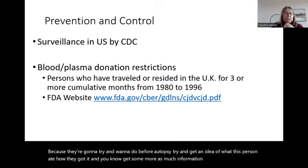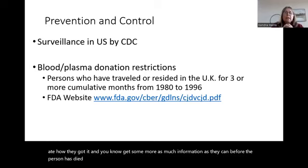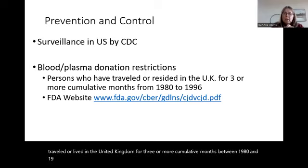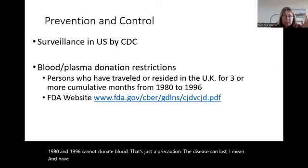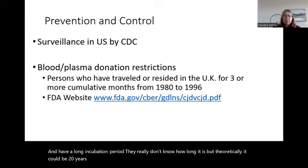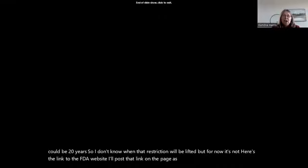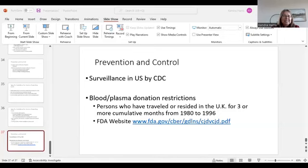Anyone who traveled or lived in the UK for three or more cumulative months between 1980 and 1996 cannot donate blood — a precaution given the potentially very long incubation period, possibly up to 20 years. The FDA website link will be posted on the course page. That's the end of the zombie lecture — thanks for listening.